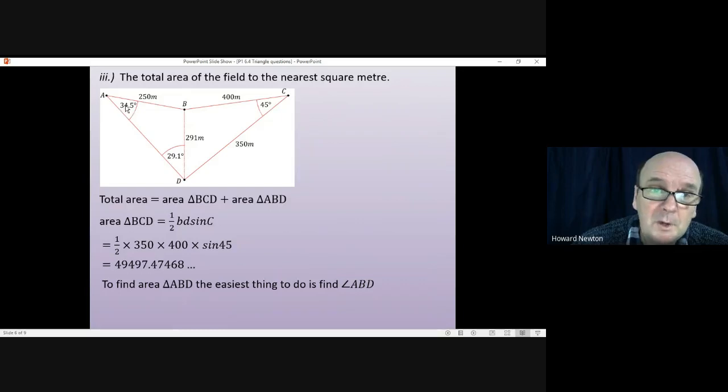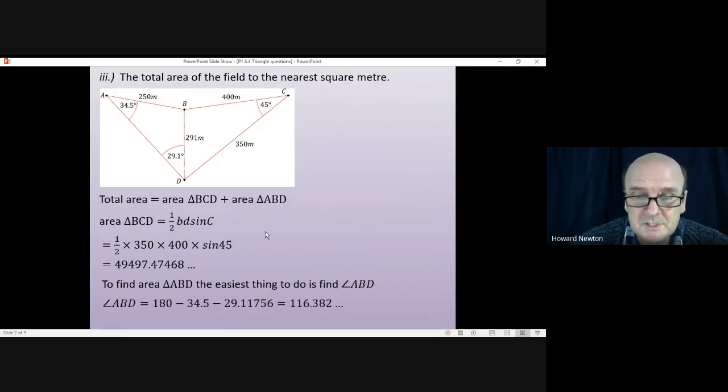However, it is easy to find that angle. We know both of these two, so we just do 180 minus those two, and that will give us angle ABD which is 116.382 degrees.